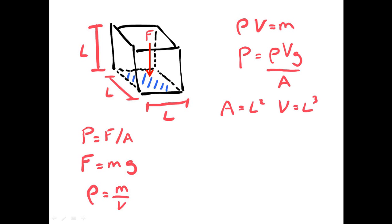Now we know A is equal to L squared and V is equal to L cubed. So pressure equals rho L cubed G divided by L squared. Well, we can simplify this as rho L G. And what's L? Well, it can be the height of the liquid. So we get pressure equals rho g h.